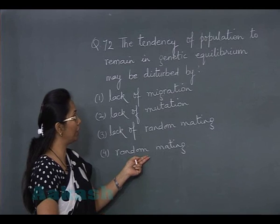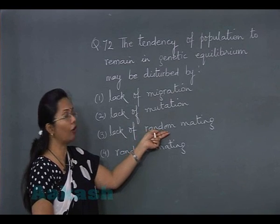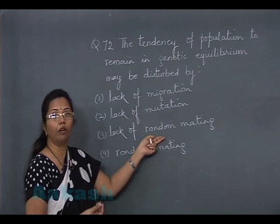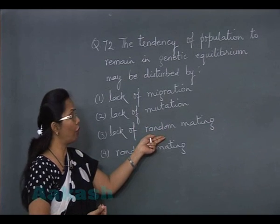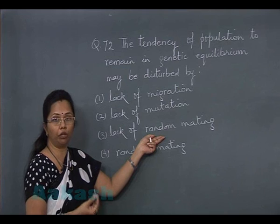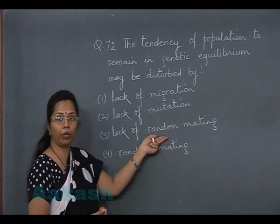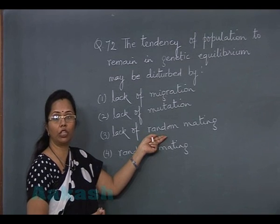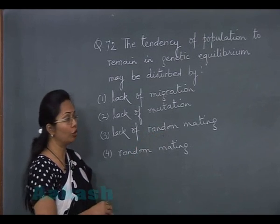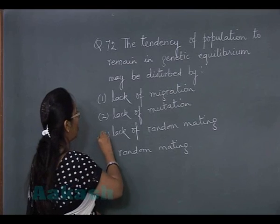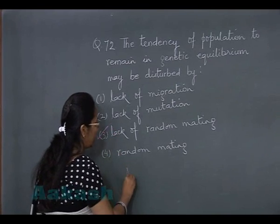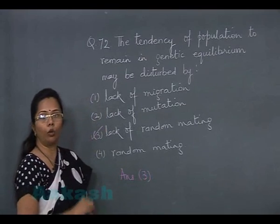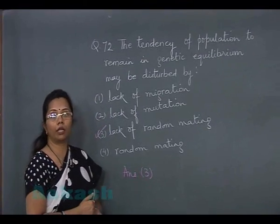If there is a lack of random mating, that means non-random mating. The best example of non-random mating is inbreeding. In the case of inbreeding, homozygosity will increase and gene frequencies will also be altered. So the best choice is option 3, and hence our answer is 3.